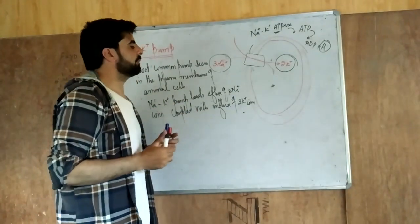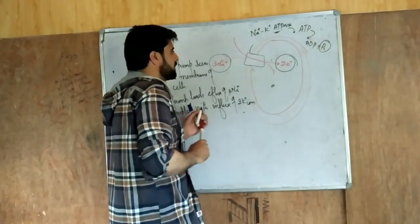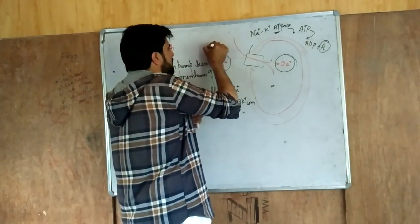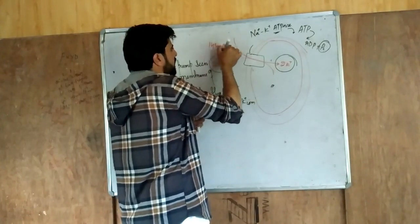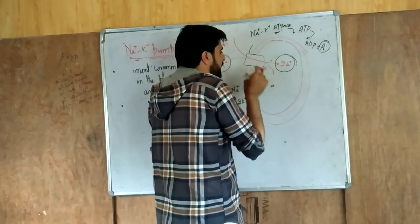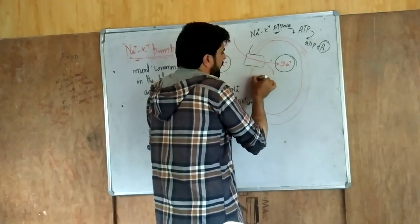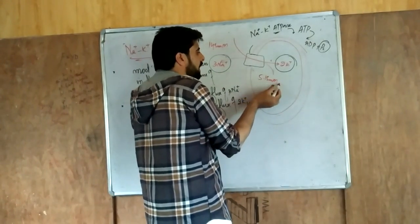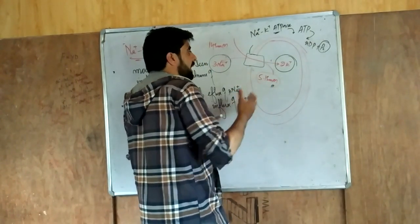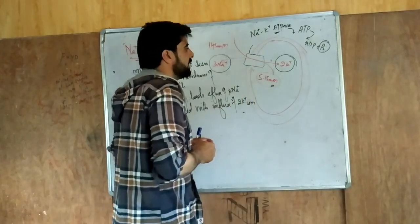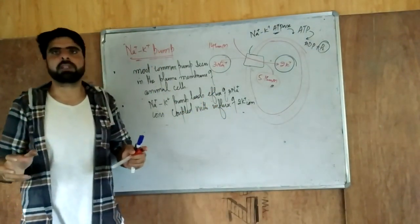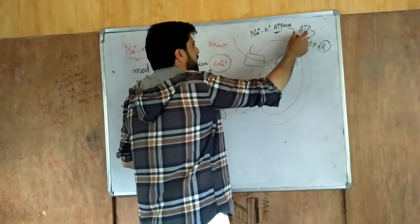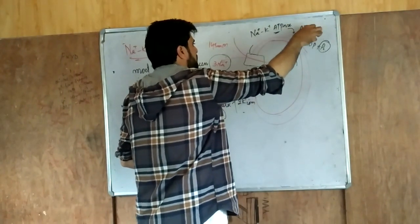The sodium concentration in the extracellular matrix is very high — about 145 millimolar — but its concentration within the cell is very low, about 5 to 15 millimolar. That means sodium is taken from lower concentration to higher concentration, which is against the concentration gradient. Transport against the concentration gradient is known as active transport.